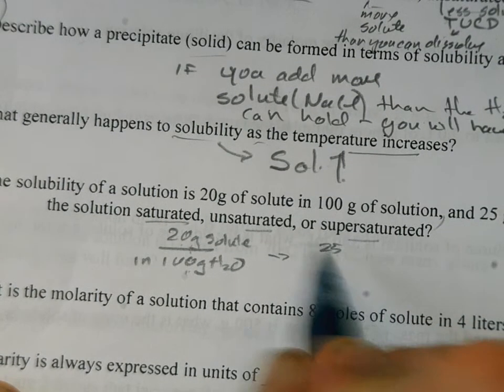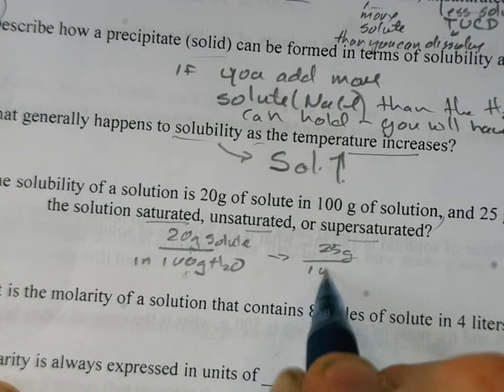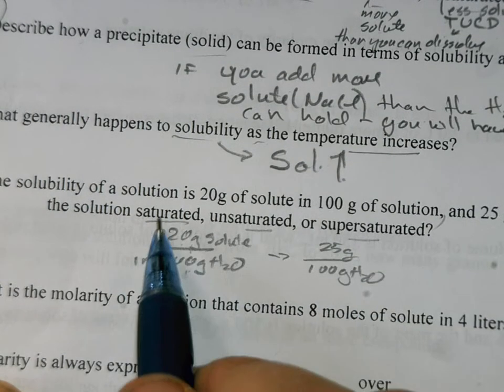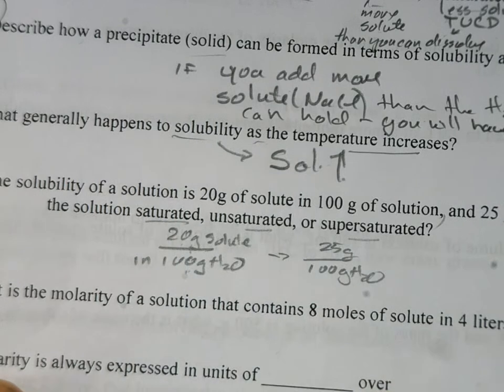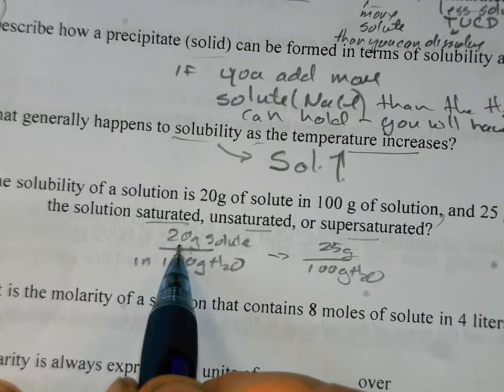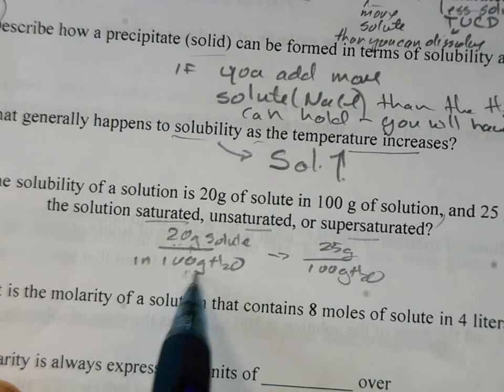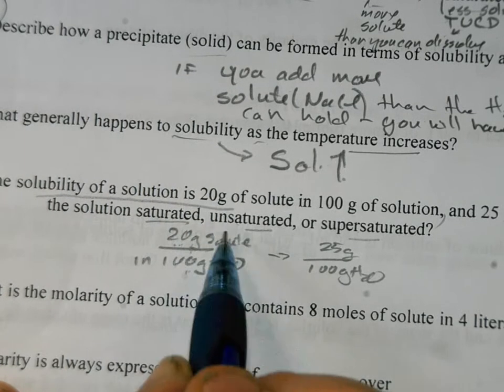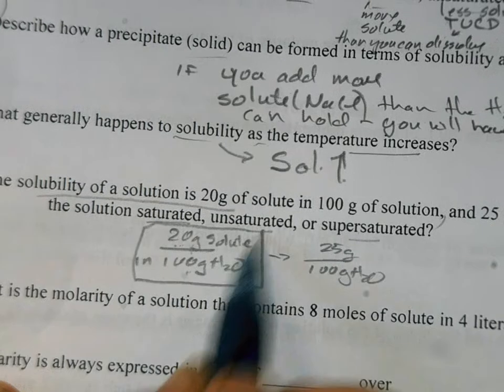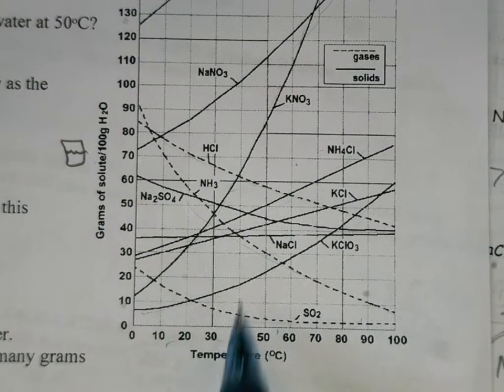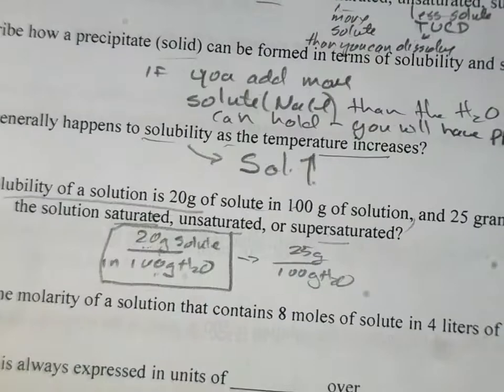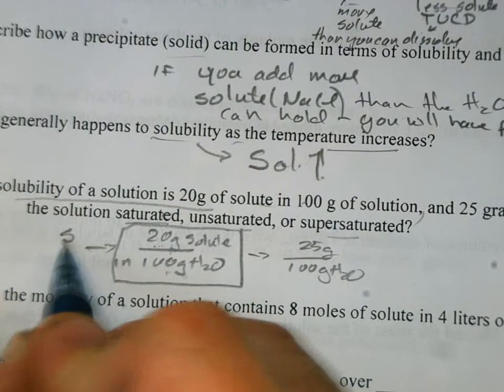Is this solution going to be saturated, unsaturated, or supersaturated? Well, they're telling us that this solution has this solubility. It can hold 20 grams of solute in that much water. It's not telling us the temperature. We're assuming the same temperature. So then they say if we were to have 25 grams dumped into 100 grams of water, they want to know whether we have a saturated, unsaturated, or supersaturated condition.